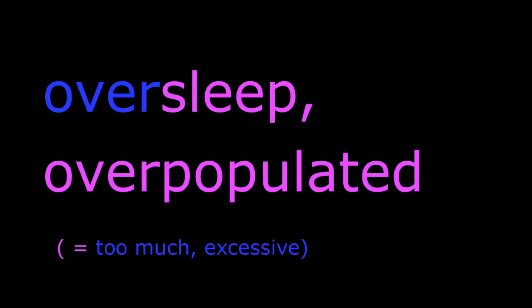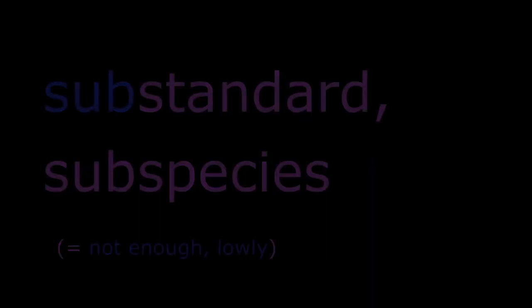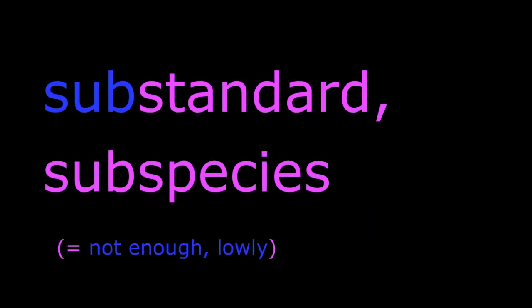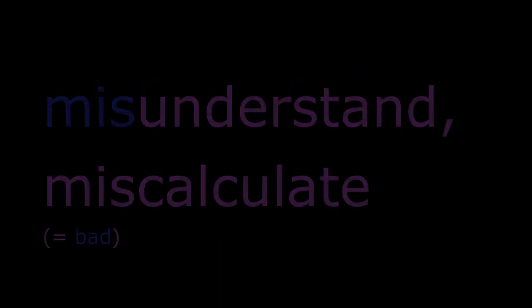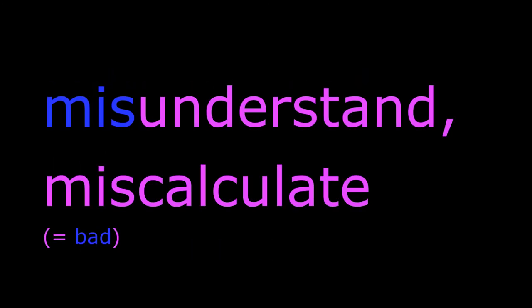OVER, UNDER, SUB, MIS — these indicate wrong, bad, under, or too much. Oversleep and overpopulated mean too much, excessive. Substandard and subspecies mean lowly or not enough. Misunderstand, miscalculate — I miscalculated!